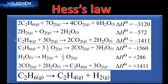In the third equation, one mole of ethane reacts with three moles of oxygen to form two moles of carbon dioxide and two moles of water. In our final equation we have one mole of ethane on the right hand side, so we reverse the equation, which also changes the sign from negative to positive.